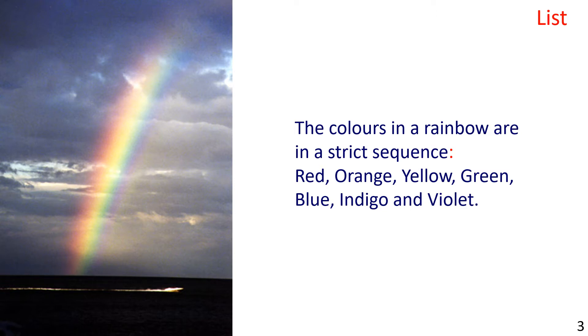The colors in a rainbow are in a strict sequence: red, orange, yellow, green, blue, indigo, and violet.